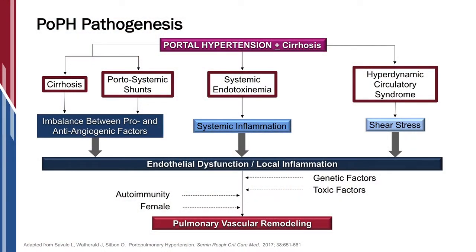So why does it happen? We have individuals with portosystemic shunts, and we believe that because of these shunts, our lungs are now seeing mediators they're not supposed to see if your liver is well. These vasoactive mediators and angiogenic factors are hitting the lung blood vessels, causing changes over time. This is all theory because we're not exactly sure of the mechanisms, but this is our general accepted idea of why this is occurring in the lungs.